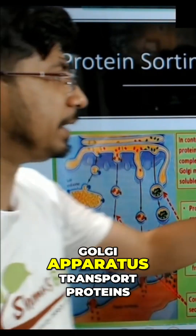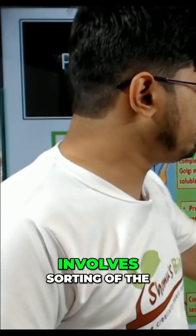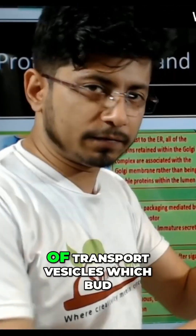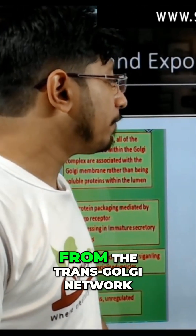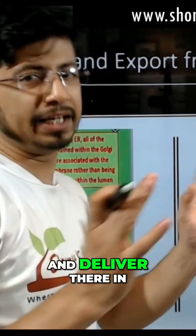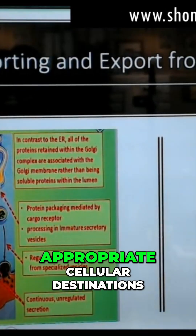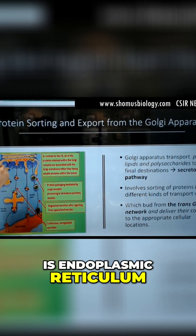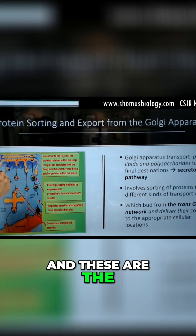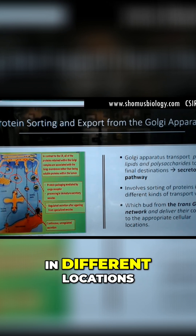Protein sorting and delivery. The Golgi apparatus transports proteins via the secretory pathway. This involves sorting of proteins into different kinds of transport vesicles which bud from the trans-Golgi network and deliver them to their destined locations in appropriate cellular destinations. In this picture, you can see the endoplasmic reticulum and these are the different vesicles, different kinds of vesicles, destined to deliver in different locations.